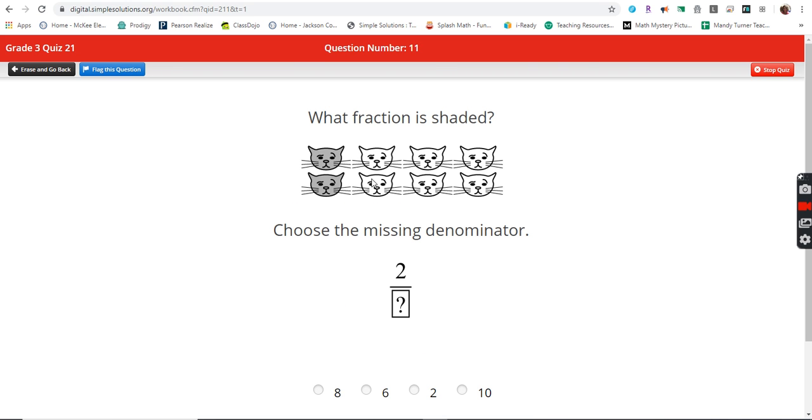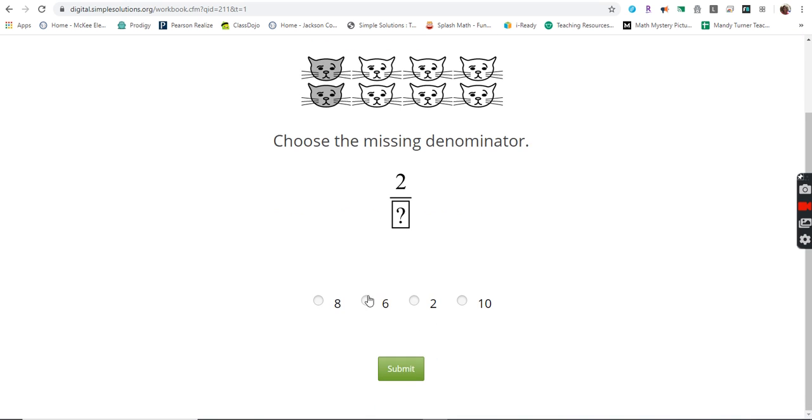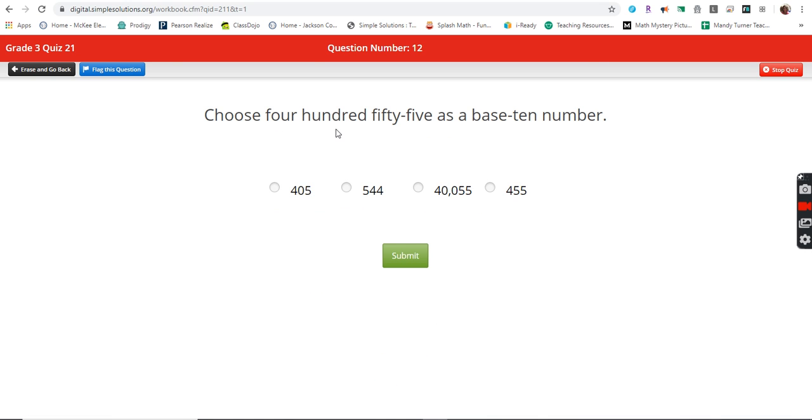What fraction is shaded? Well, I already have the two cats that are shaded, but I just count the cats in all. Two, four, six, eight cats in all. So two eighths are shaded. Choose 455 as a base 10 number. That is just standard form.